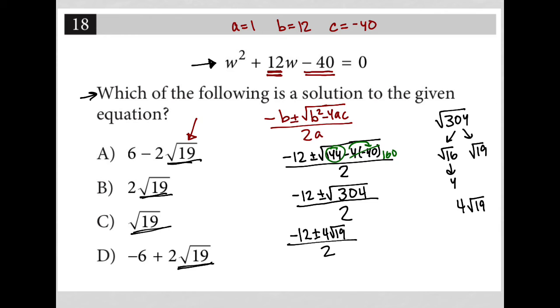Let's start simplifying. 2 goes into itself once. 2 goes into 4 twice. 2 goes into negative 12 six times. So what we're left with is negative 6 plus or minus 2 root 19. And that's as far as we can simplify.